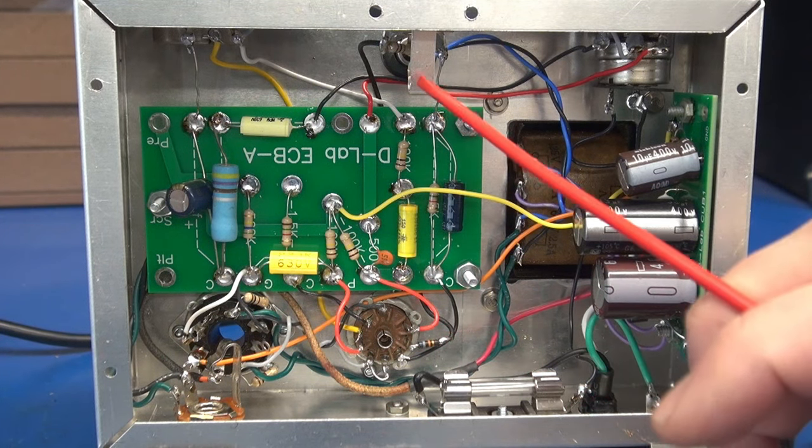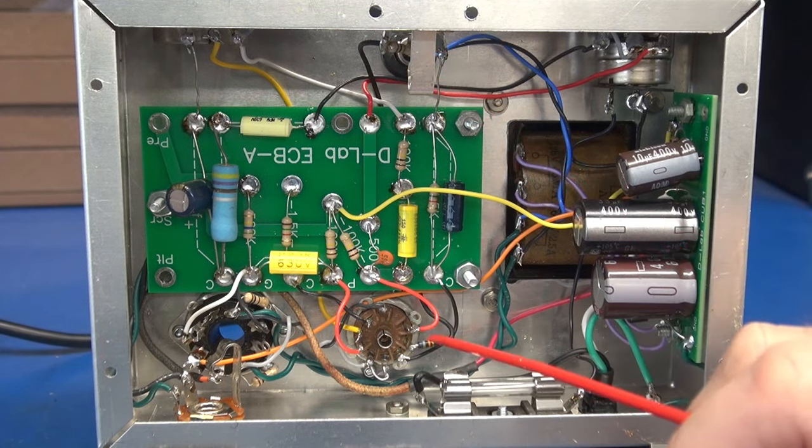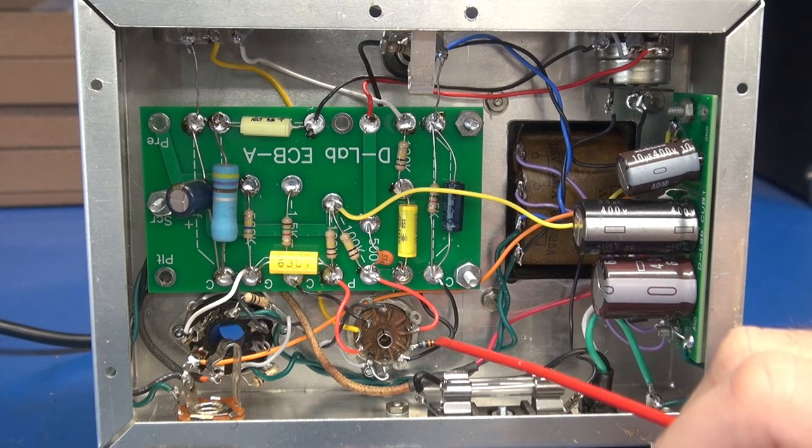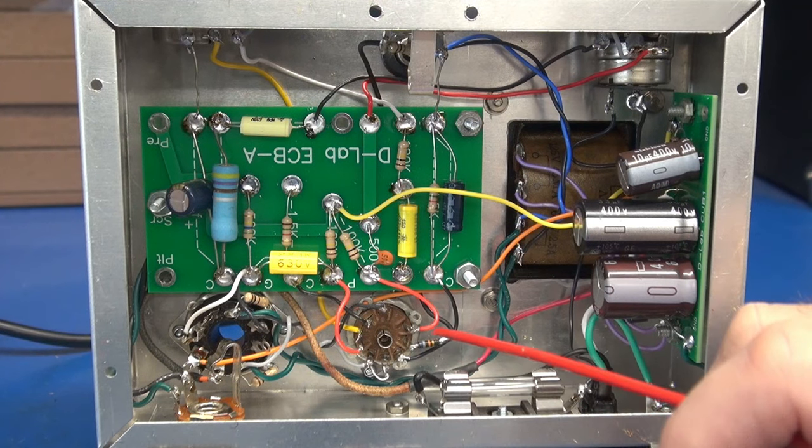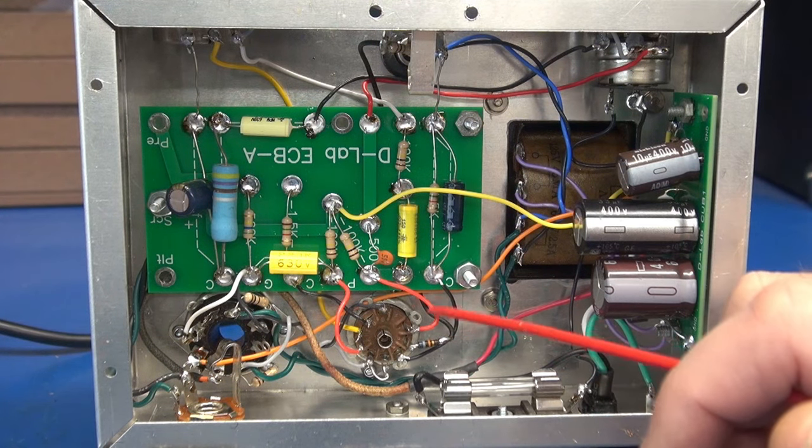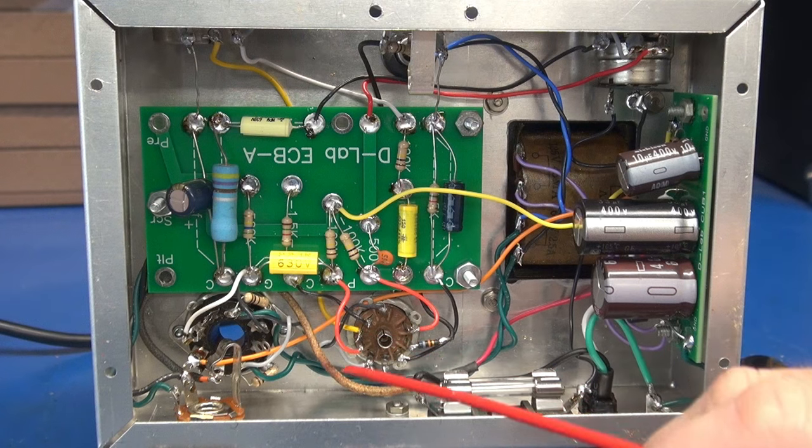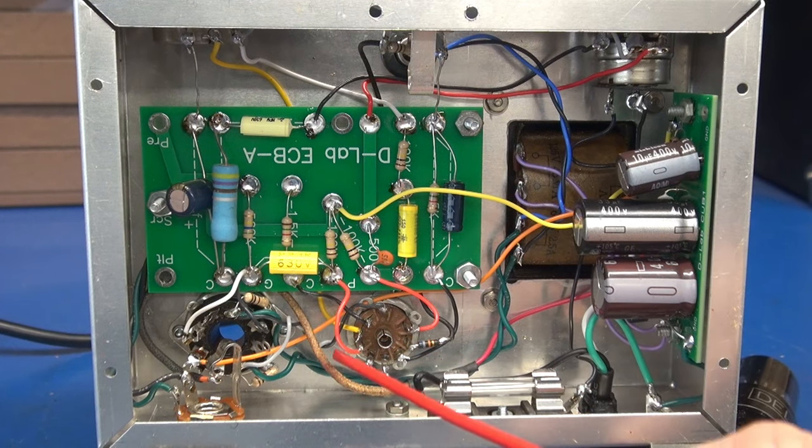All right, right here is my 12AX7. So we're coming through the input jack to pin 2 through a 68K resistor. You can see that all my leads are extremely short, so this amp is a noise-free design.